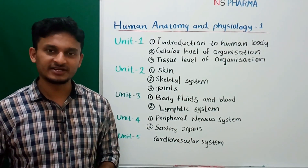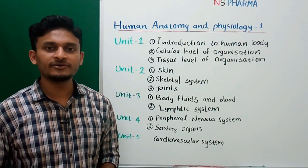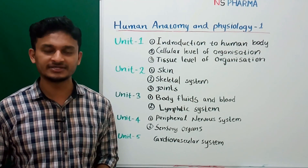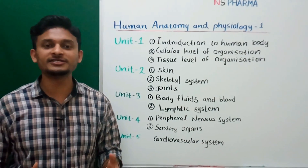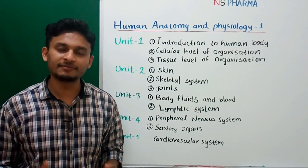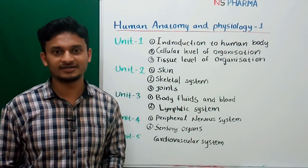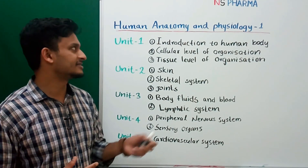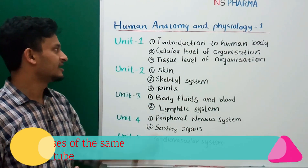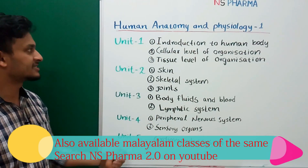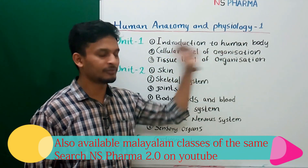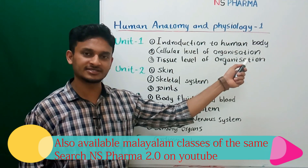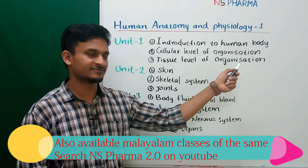Hi everyone, welcome to another video of Phenus Pharma. In this video, I will cover the definition and scope of Anatomy and Physiology. That is the first point you have to study in semester 1, Human Anatomy and Physiology 1. So what are the things you have to study in Human Anatomy and Physiology 1? There are total 5 units. The first chapter is Introduction to Human Body, and we will cover definition and scope of Anatomy and Physiology in this video itself.